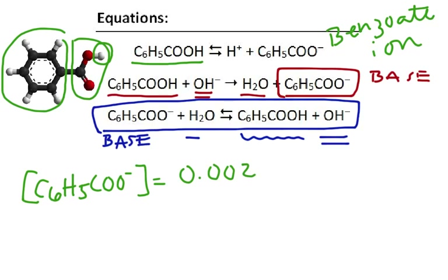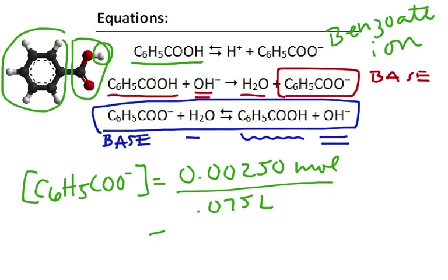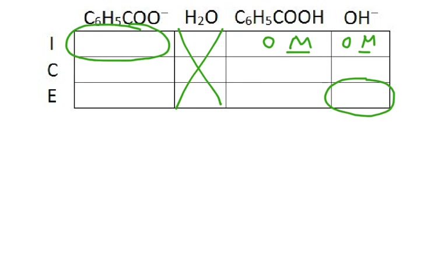0.0025 moles of benzoate ion divided by the total volume of 75 milliliters — 0.075 liters — gives us a concentration of 0.0333 molar. That's important because it will be our initial value in our ICE box.